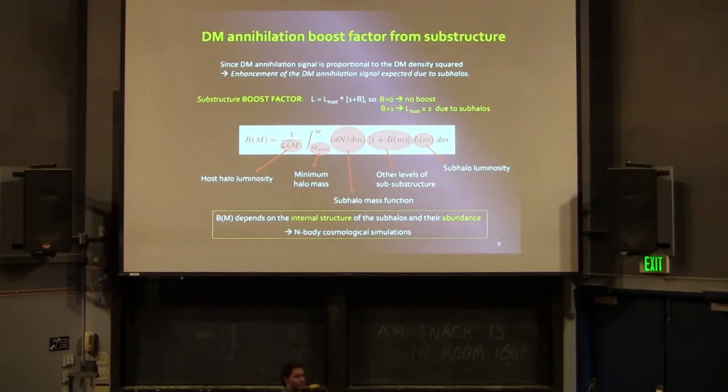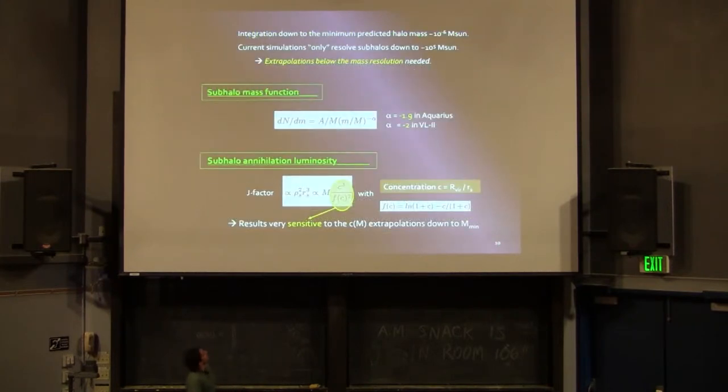You have to integrate all this between the minimum halo mass up to the mass of the host that you are considering, and all that divided by the host halo luminosity, according to this definition here. It's very clear, it's obvious that this boost factor depends essentially on the internal structure that you consider for these subhalos, which gives you the luminosity, and this subhalo mass function is telling you about abundance, how many subhalos you have per mass decay.